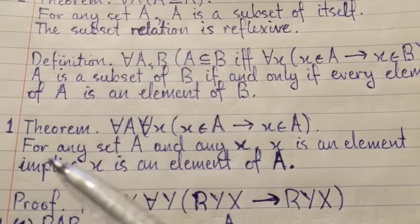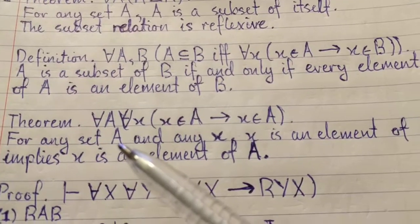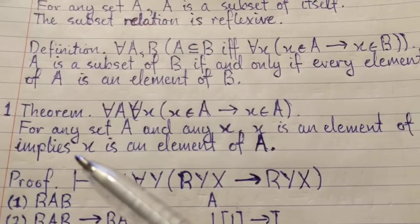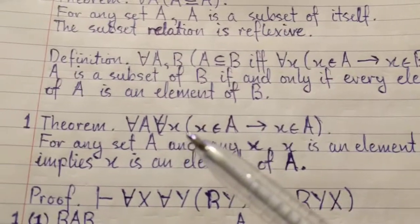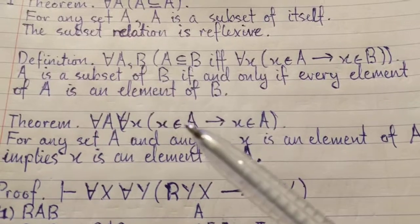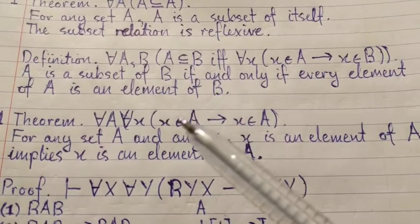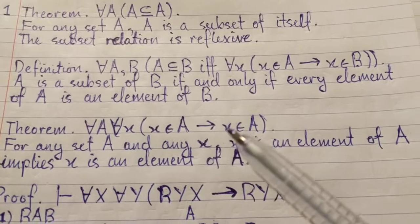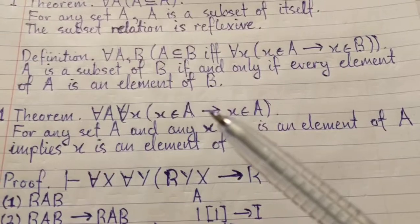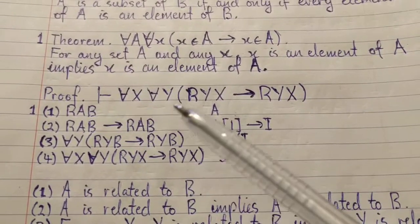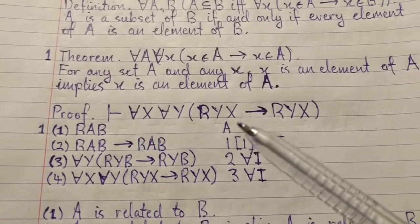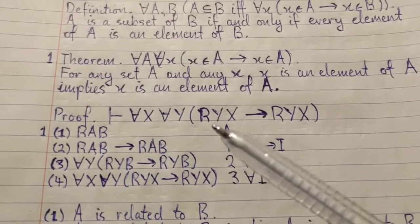So, this says, for any set A and any x, x is an element of A implies x is an element of A. So, immediately, we see that the implication is rather trivial. And you could almost state it, say that it's true on the basis of common sense. But I have given a proof, and I will go into more detail on how to understand the proof in the next video.